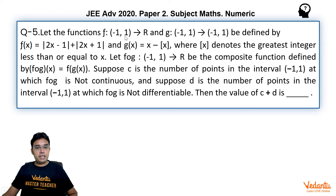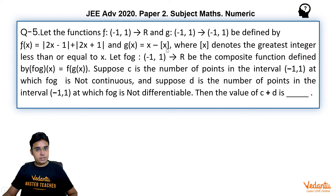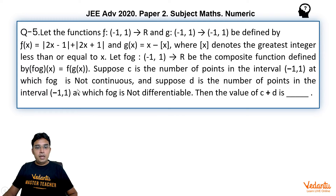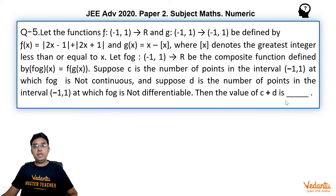Let the functions f: (-1,1) → R and g: (-1,1) → (-1,1) be defined by f(x) = |2x - 1| + |2x + 1| and g(x) = x - [x], the greatest integer function. Let fog: (-1,1) → R be the composite function defined by (fog)(x) = f(g(x)). Suppose c is the number of points in (-1,1) at which fog is not continuous, and d is the number of points at which fog is not differentiable. Then find the value of c + d.